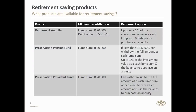The second product is the preservation fund. This is the product you'll consider when you need to preserve your retirement benefits, which originate from a pension or a provident fund. Typically, this will be the instance where you resign or perhaps are retrenched. In these cases, it's obviously very tempting to take that cash benefit instead of preserving the funds. However, this has tax implications and also reduces your retirement savings quite significantly — you're taking away the power of compounding growth on the funds from yourself. The minimum contribution for our preservation funds is also 20,000 Rand.